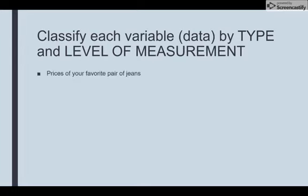Prices of your favorite pair of jeans – prices involve money. Money is numbers, so I'm going to say quantitative for sure. Then I have to think about is it discrete or continuous. I suppose you could go either way, but we typically think about things in terms of whole units. So we would say $20, or even if it's $19.99, that's considered whole or discrete.